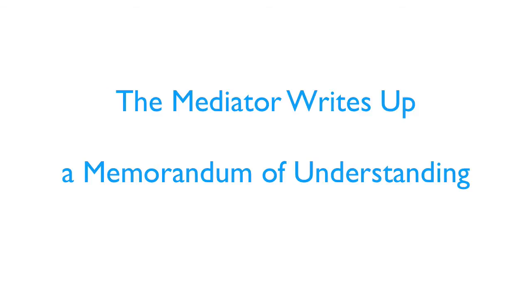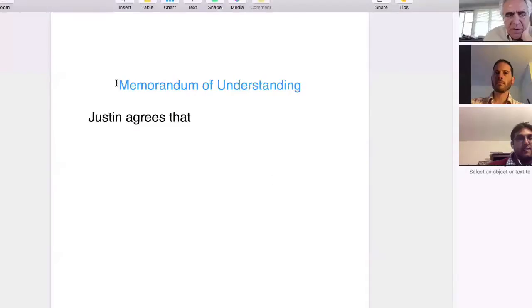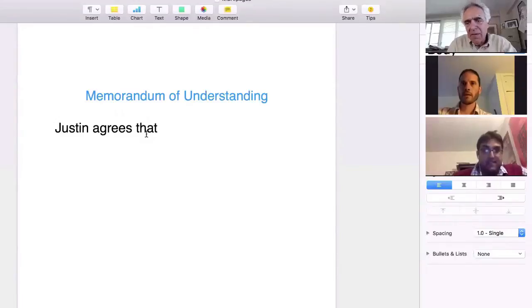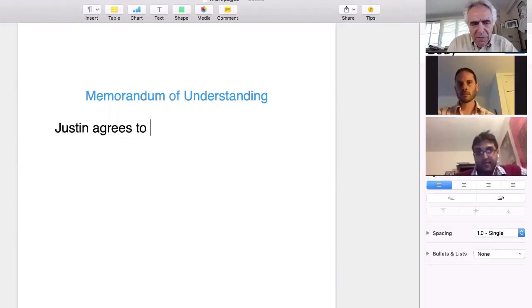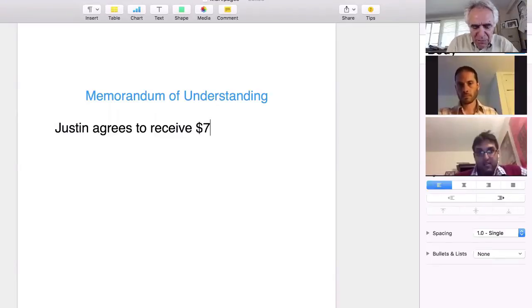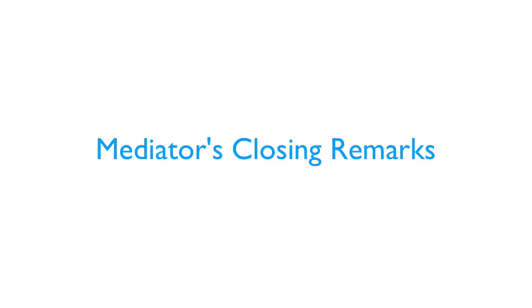Hold on a second. Tell me when you see something on your screen. I can see it. Justin agrees to receive $750 from Manish. If anything goes wrong, you agree to call me back without getting angry. That's okay. Are we done with this? Yeah. Thank you very much. Thank you.